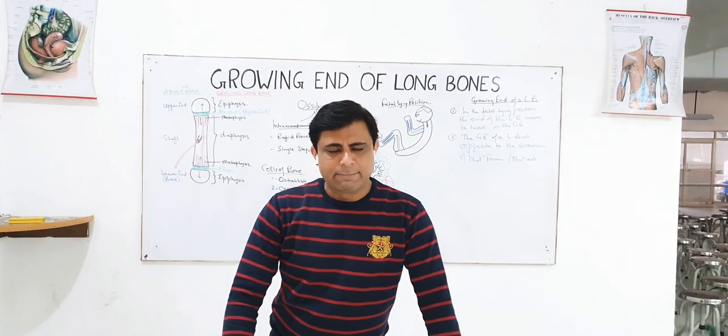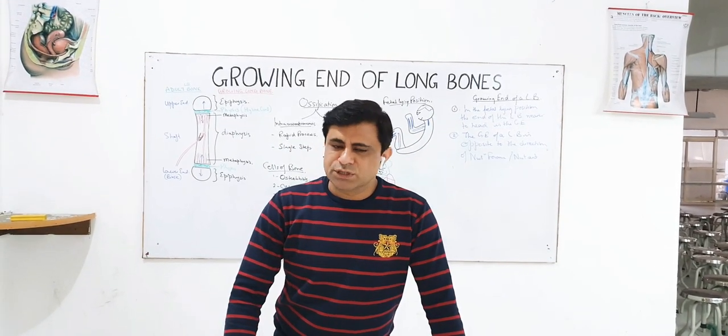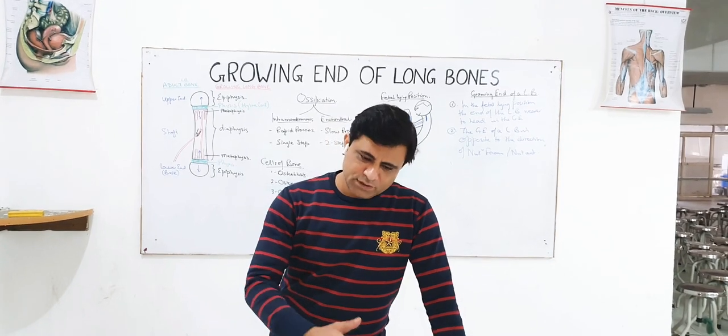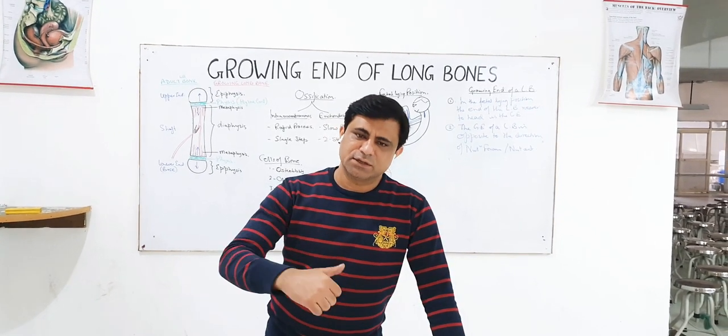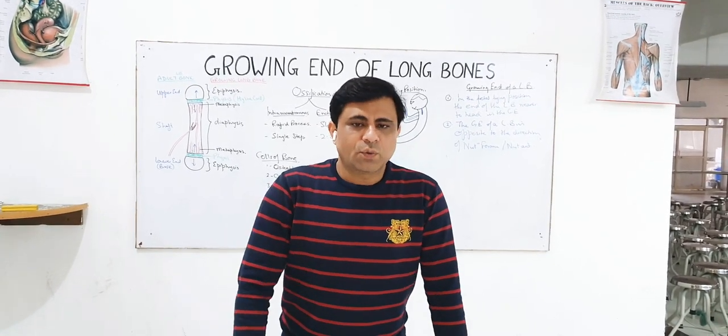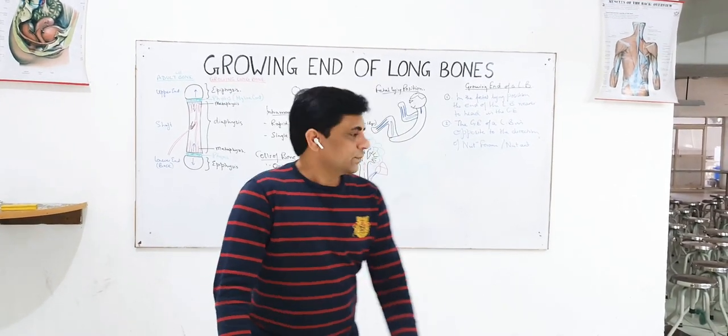Criteria number two: each long bone has a nutritional foramen somewhere in the middle of the shaft. This foramen is obliquely directed — it points away from the growing end. The nutritional artery enters through this foramen obliquely. The growing end of a long bone is opposite to the direction of the nutritional foramen or nutritional artery. So just look at the direction of the nutritional foramen and the growing end is on the opposite side.